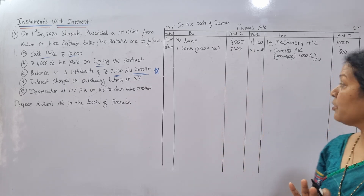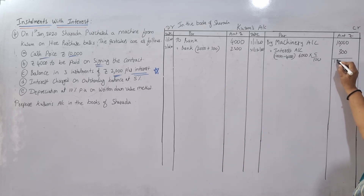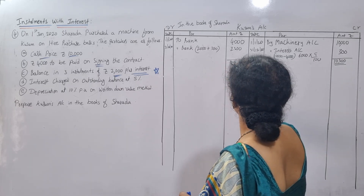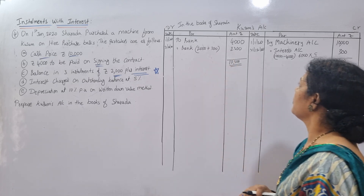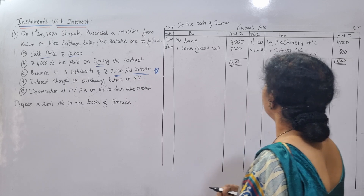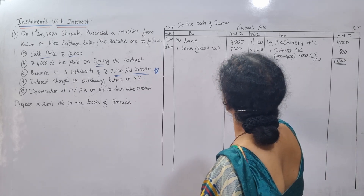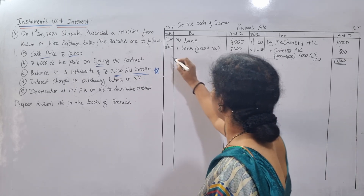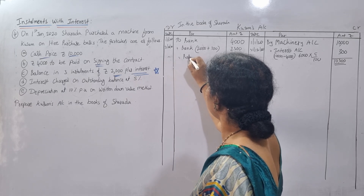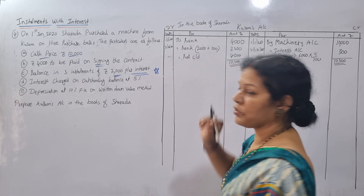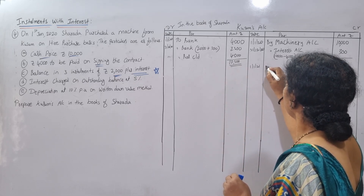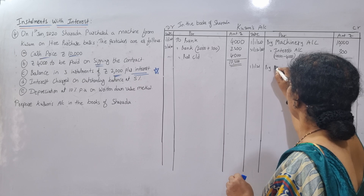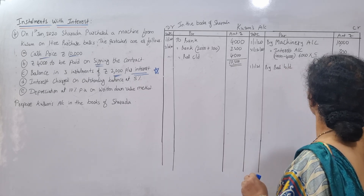The account totals to 10,300. Debit side totals 6,300 (4,000 + 300 + 2,000 + interest), leaving a balance carried down of 4,000. First installment is over, two more remain. Balance brought down on 1st January 2021 is 4,000.